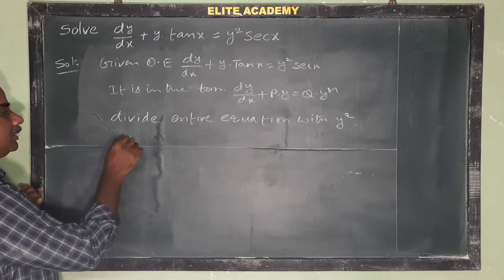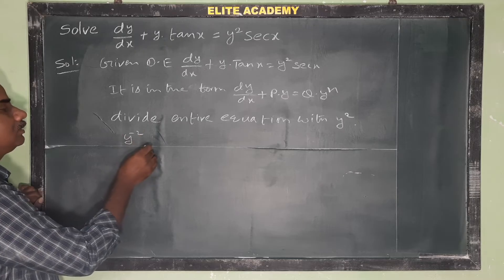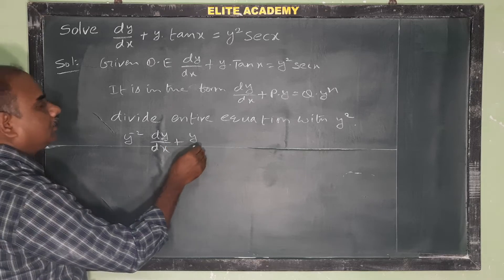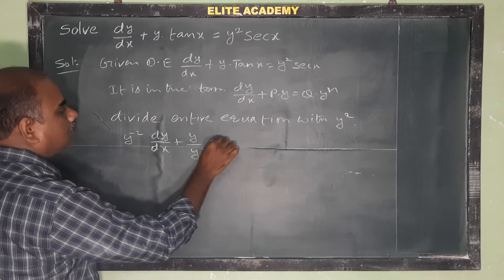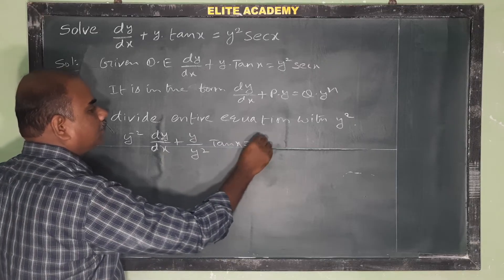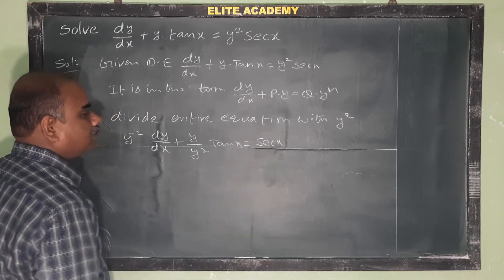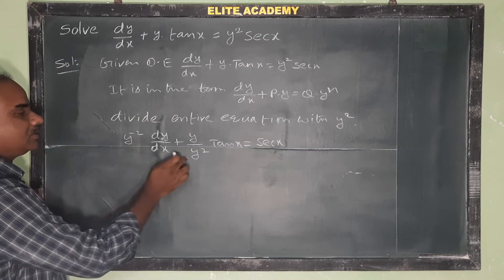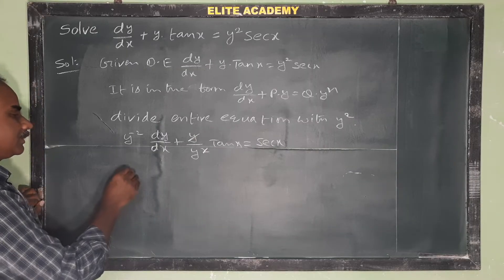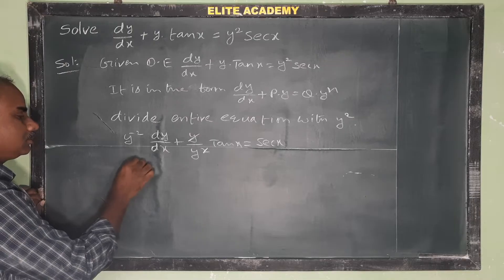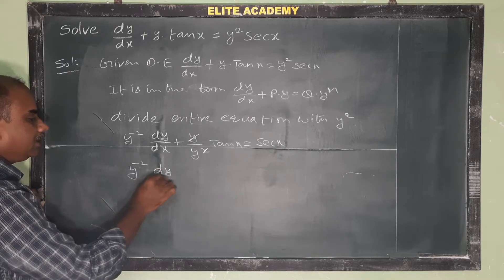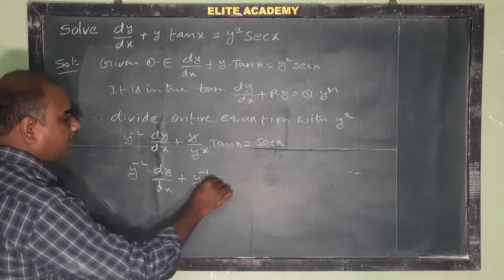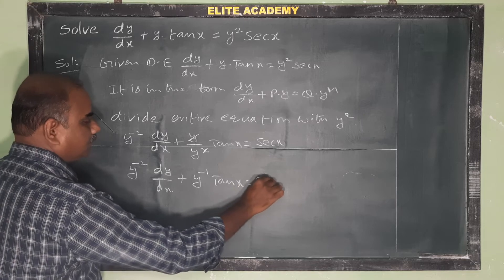So we get y^(-2)·dy/dx + (y/y²)·tan(x) = sec(x). y² divided by y² cancels, giving y^(-2)·dy/dx + y^(-1)·tan(x) = sec(x).